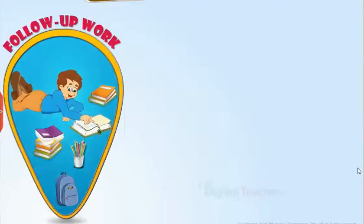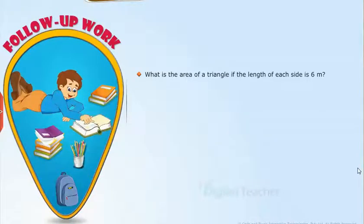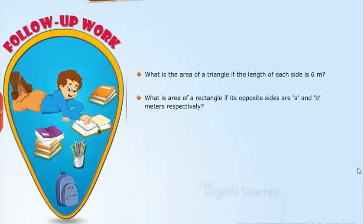Follow up work: What is the area of a triangle if the length of each side is 6 meters? What is the area of a rectangle if its opposite sides are A and B meters respectively?